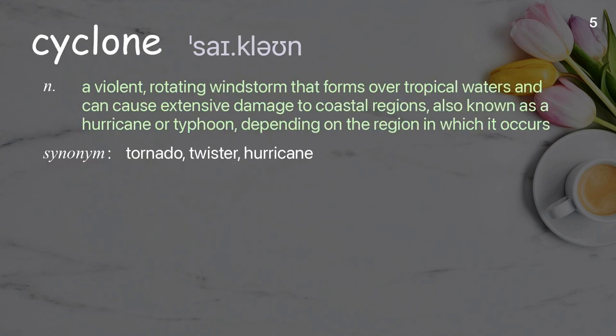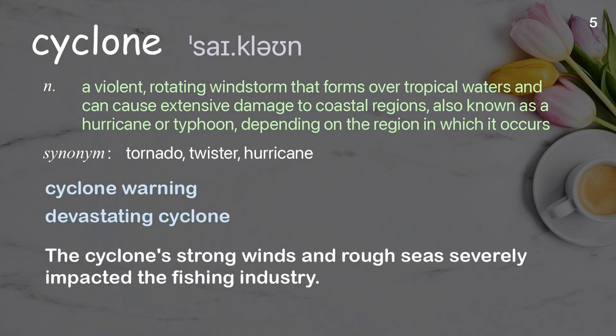Cyclone. A violent, rotating windstorm that forms over tropical waters and can cause extensive damage to coastal regions, also known as a hurricane or typhoon, depending on the region in which it occurs. Examples: cyclone warning; devastating cyclone. The cyclone's strong winds and rough seas severely impacted the fishing industry.